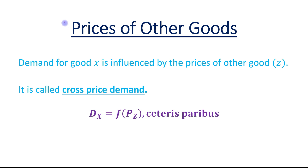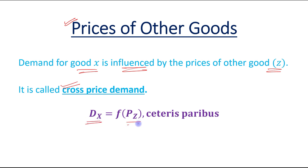The second factor that affects demand is prices of other goods. We have already talked about this factor in our last video, where we studied that demand for good X is influenced by the prices of other related goods — for example, good Z. This type of demand is called cross-price demand. In mathematical form, demand for good X is a function of price of good Z. Ceteris paribus means that other factors which can affect demand are assumed as constant.